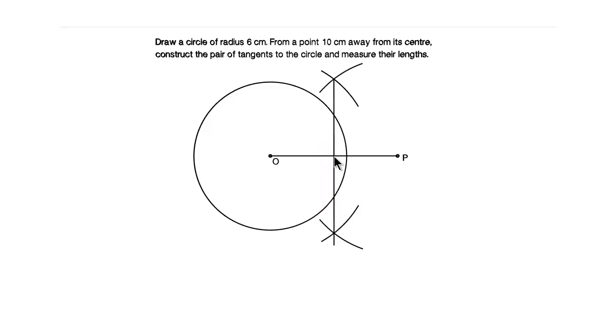Now let us mark this intersection point as Q. Now taking Q as a center and OQ or QP as a radius, draw a circle which intersects this circle at two points.